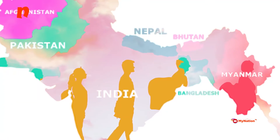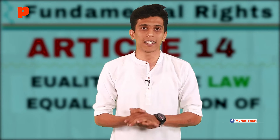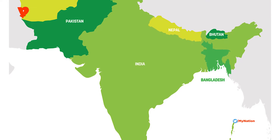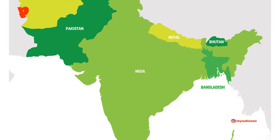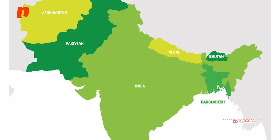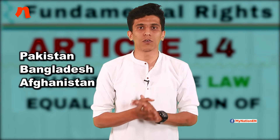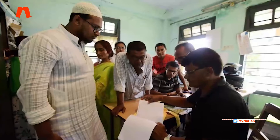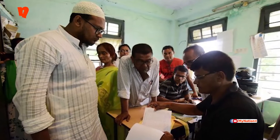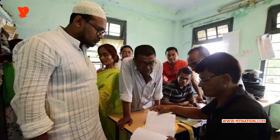It also says that the person should have entered India before December 31, 2014, and should have been exempted by the central government under any relevant law. The amendment is restricted to three countries where Islam is the official state religion, meaning the said communities named in the amendment are minorities in these countries. The amendment only provides relaxation to these persons who form a minority group in these countries. Moreover, the amendment does not prevent minorities from applying for citizenship and also does not declare fresh foreign Muslim applicants as illegal immigrants.